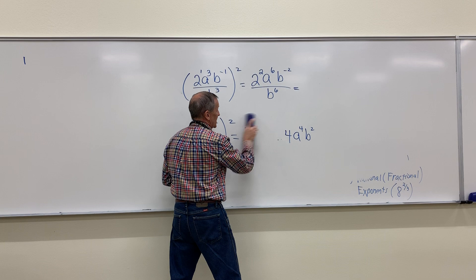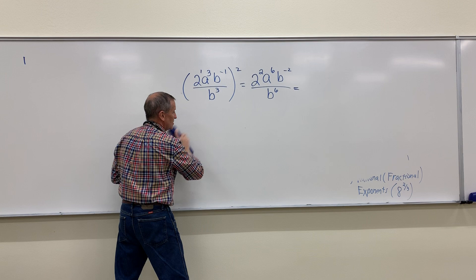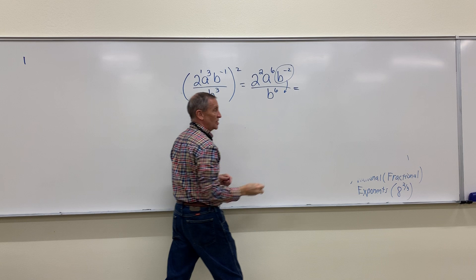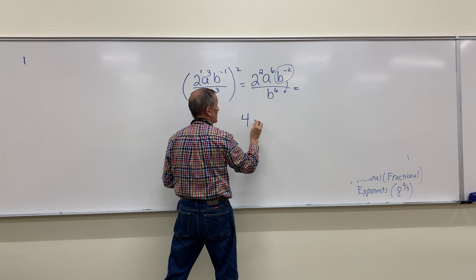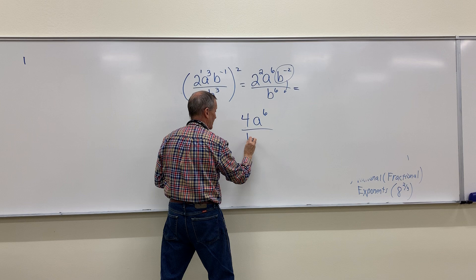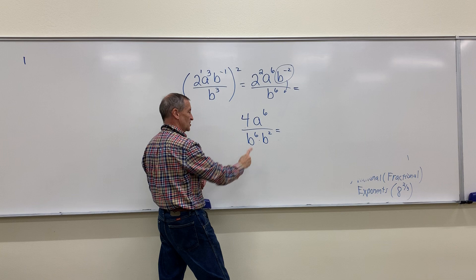That b to the negative 2 needs to come downstairs and change the sign of the exponent. I'm sorry, 2 squared is 4. A to the 6 is what's in the numerator. In the denominator, I have b to the 6 and b squared. Still not finished until I use the first property of exponents to combine these two guys.